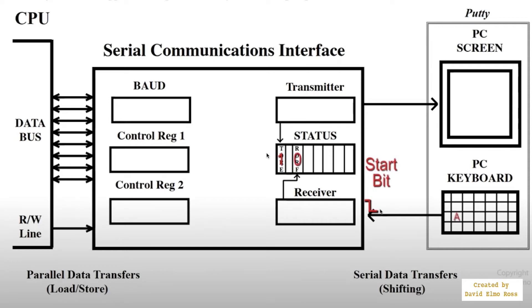An interrupt is created by a random event such as hitting a key on a keyboard. Another type of interrupt is a periodic interrupt where, for instance, a microcontroller may wake up every five minutes, sample the temperature, send the temperature, and go back to sleep. Every five minutes it will take the temperature — that's called a periodic interrupt.